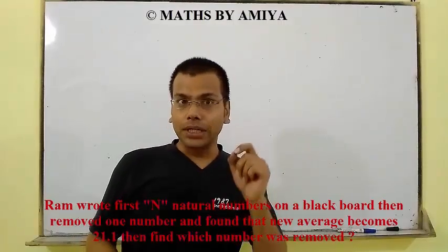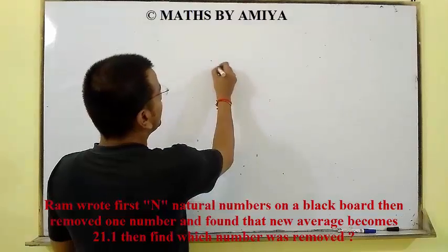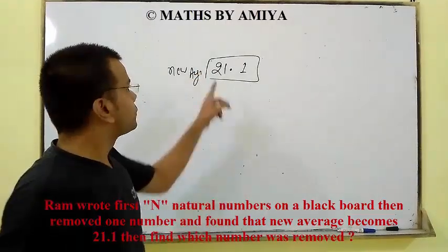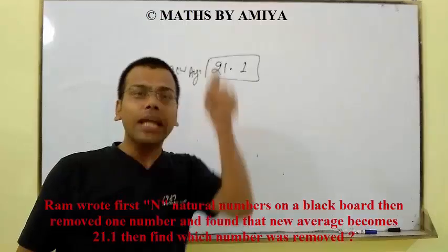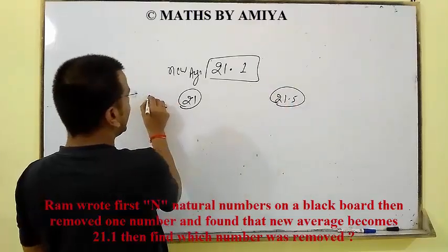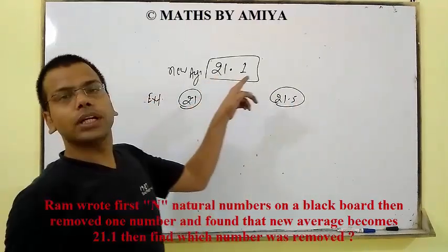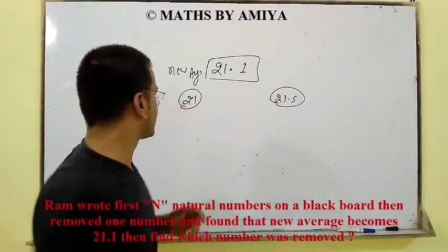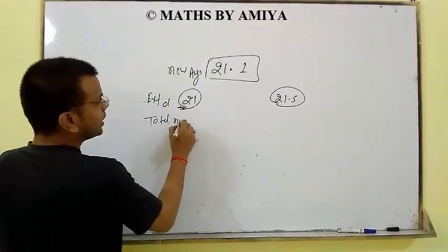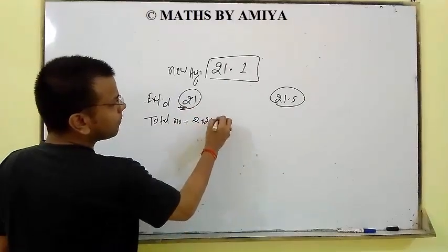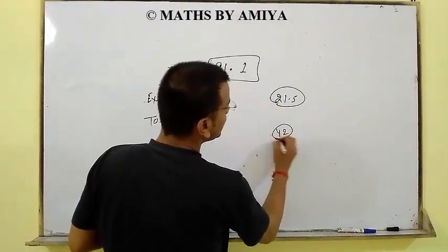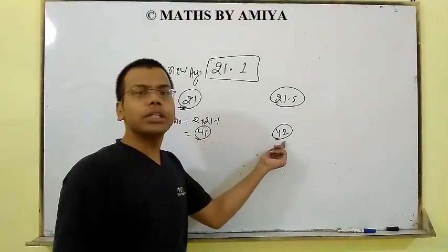Now let's solve our question. One number is removed and the new average becomes 21.1. If 21.1 is the new average, then the old expected average is either 21 or 21.5. If old average is 21, total old numbers = 2×21 − 1 = 41. If old average is 21.5, total old numbers = 2×21.5 − 1 = 42. So before removal we had either 41 or 42 numbers.